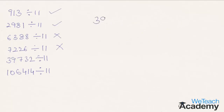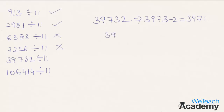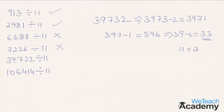Moving to the next number 39732: subtract the last digit 2 from the remaining number 3973. We get 3971. Now repeating the concept: subtract 1 from 397, we get 396. Repeating the concept again: subtract 6 from 39, we get 33, which is nothing but 11 into 3. So the given number is also divisible by 11.